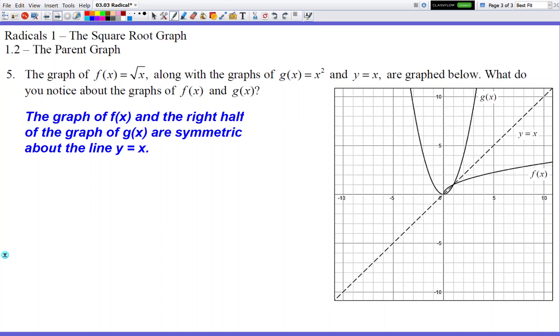Last question, number 5. Okay, so here's a picture of, or here's a graph of g of x, which is your x squared graph. So let me write that on the graph. And f of x, which is your square root of x graph. And if you notice, when those two graphs are drawn together on the same grid, they're symmetric with each other. They're symmetric about the line y equals x.